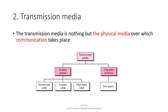Transmission media is the physical medium over which communication takes place. There are two types: guided (wired) and unguided (wireless). Guided media is divided into twisted pair cable, coaxial, and fiber optic cable. Unguided media uses free space.